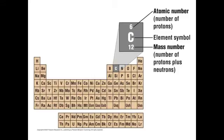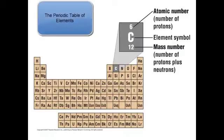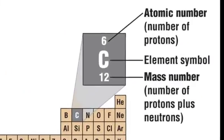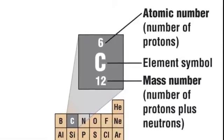Scientists really like to organize things in meaningful ways, and elements are no exception. The elements have been organized into what is called the periodic table of elements. The periodic table gives us a few very important pieces of information about each element. We are given the element symbol, the atomic number, and the mass number.